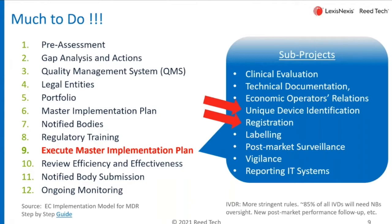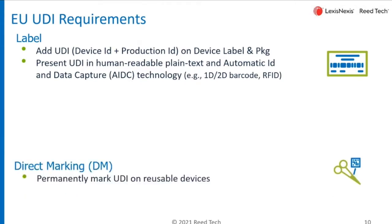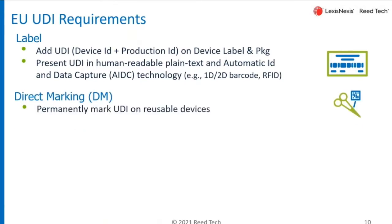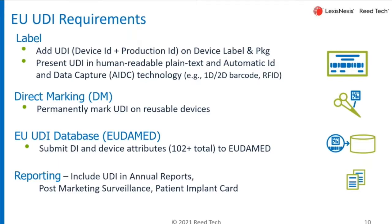Let's take a quick summary of the UDI requirements regarding MDR-compliant devices. There are a couple of major areas. Labeling is obviously a big component — having a unique product identifier on the product and packaging, presenting it human-readable and in a barcode-type format. A subset of all those medical devices qualify as reusable and therefore need to be directly marked. Today our focus is number three: the European Union UDI database, the number of attributes that need to be submitted, and then obviously all the reporting, documentation, procedures, and SOPs that need to be put in place. There are four major tenants of UDI.